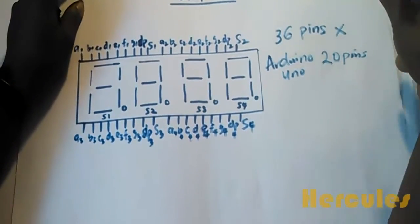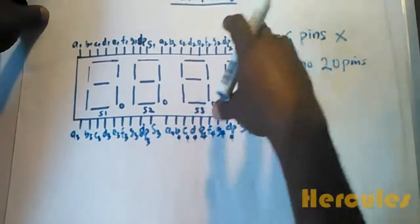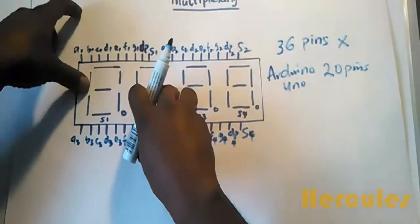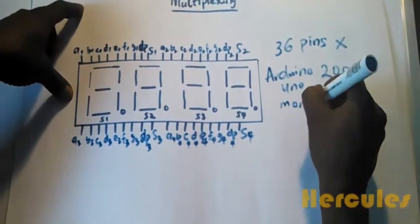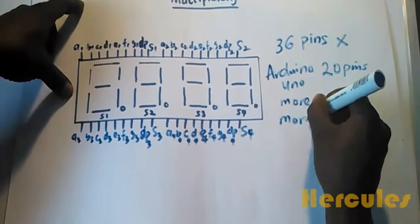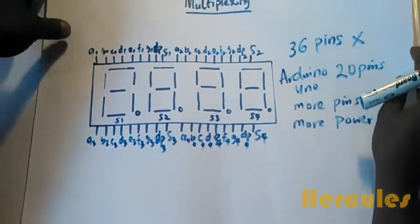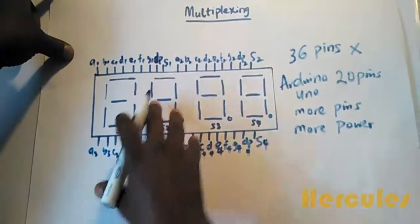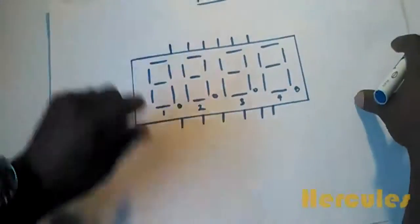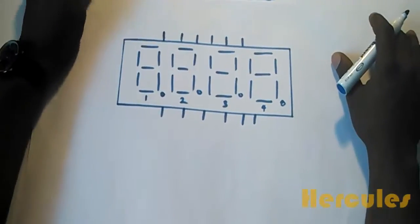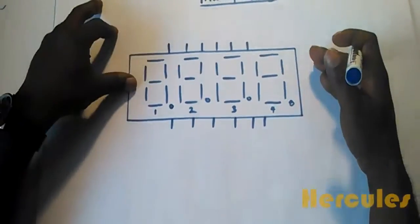There ought to be a better way, and that's what multiplexing does. Multiplexing helps us handle this problem by reducing the number of pins. Because we're using more pins, it means we're using more power. Multiplexing saves us the number of pins we'll be using. This is how multiplexing saves us microcontroller pins.